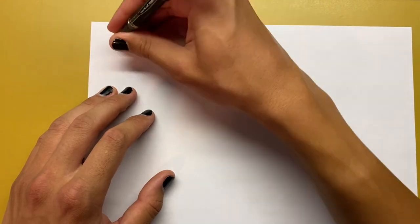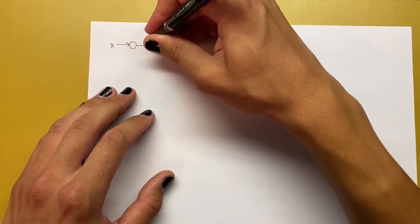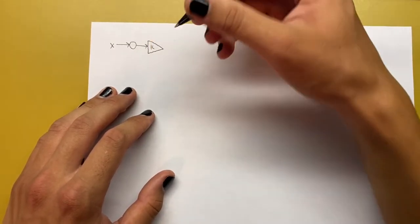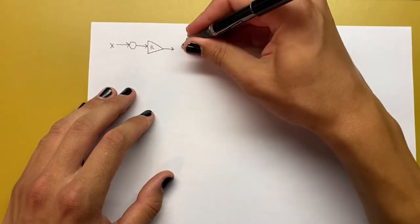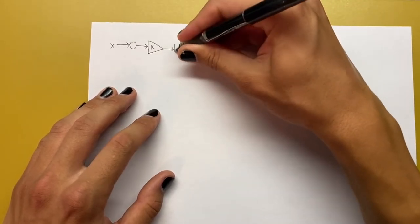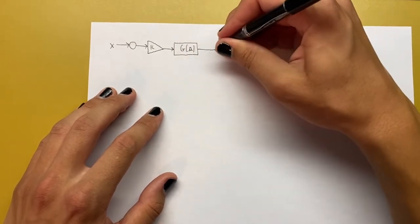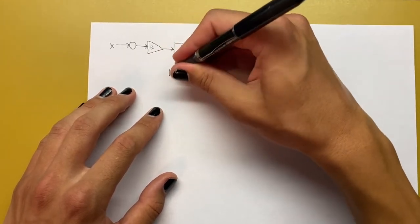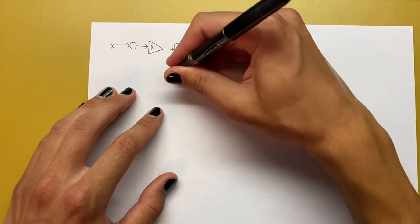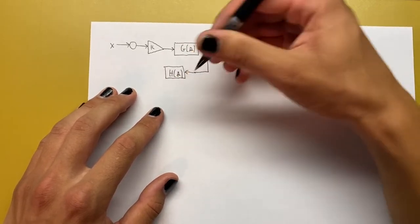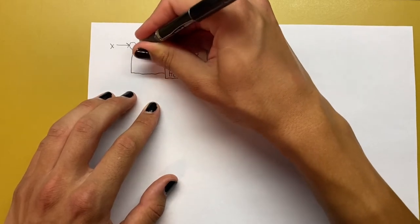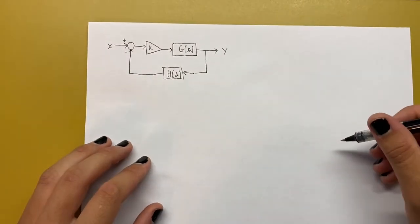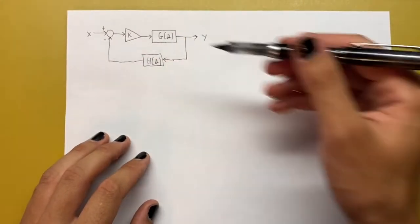We have an input — we'll call that x — going into a summing junction. This is just going to be proportional control, so we'll draw a gain block called the gain k, and then that goes into our plant g of s, and then we have our output y, which is fed back through our feedback transfer function h of s, and then that goes back into the summing junction with negative feedback and positive from x. This is our basic block diagram for a proportionally controlled feedback control system.